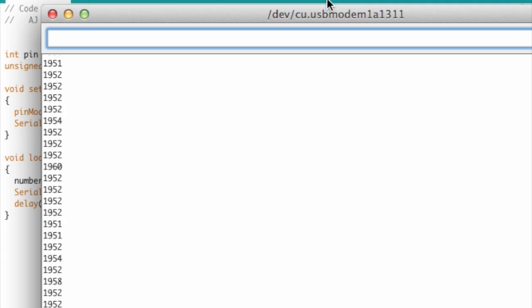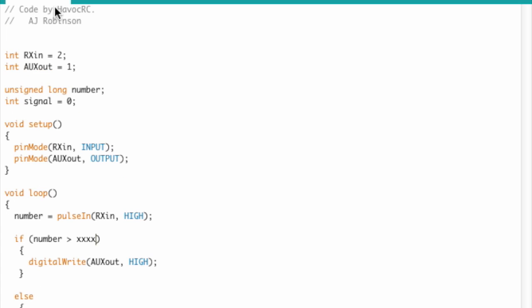You'll notice that one number is low and the other number is quite high. Mine's around 1000 and then the high is around 2000. Now replace the XXX in the code with the number that is halfway between the low and high numbers. Upload this sketch to your Arduino and you're ready to start breadboarding. If you don't have an Arduino and can't do this process just try out the number 1500.